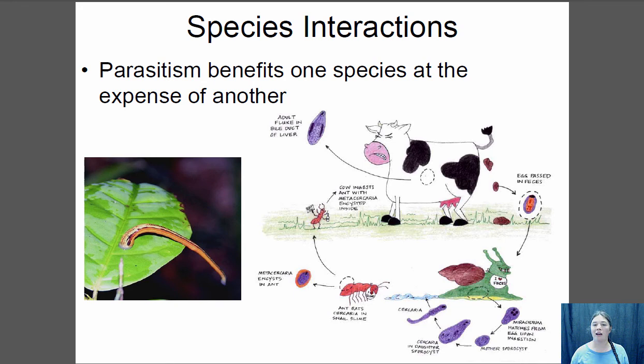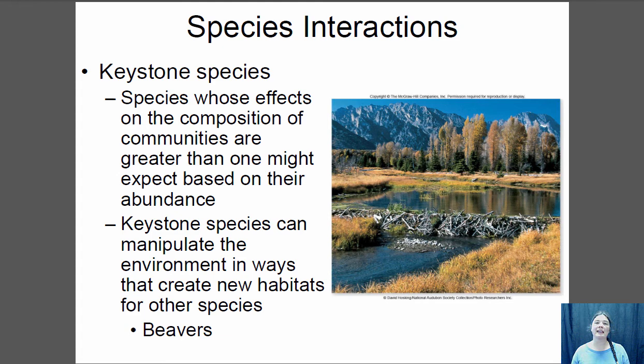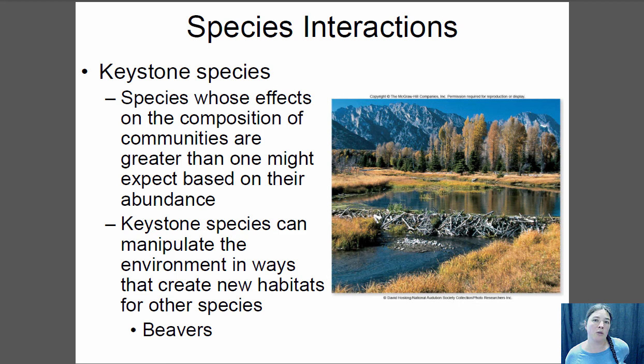One more important concept is keystone species — species that have a larger impact on their community than you might expect based on their abundance. There aren't many of them, but they have a really large impact. A classic example is beavers: they completely change their community by building dams, turning a stream community into a lake community. They provide habitat for organisms that like still water — fish, insects, and certain plants — so the community is very different with beavers present than without.